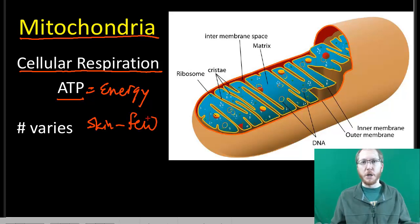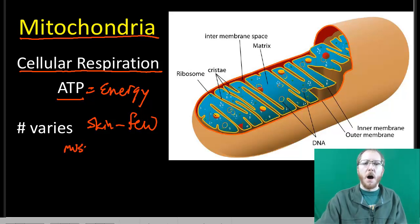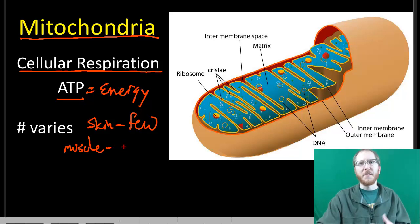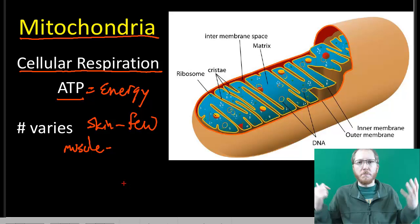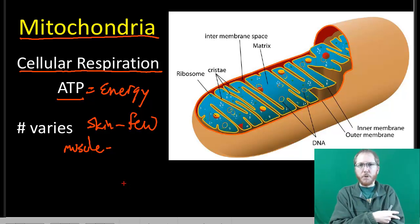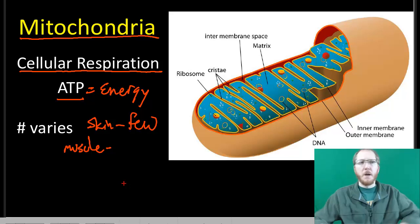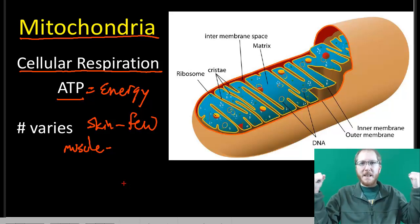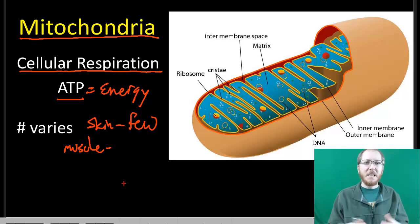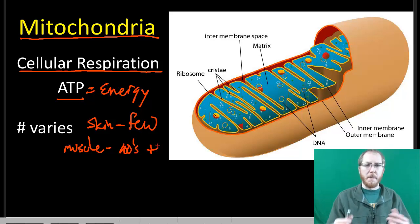The number of mitochondria will vary based on a cell's job. A skin cell would have very few because it does pretty much nothing — the equivalent of a couch potato; it just sits there on your skin. Whereas a muscle cell will have hundreds to perhaps even thousands of mitochondria because it's doing so much work — trying to use energy to contract and tug on things so we can move. It takes a lot of ATP, so muscle cells would typically have at least hundreds of mitochondria to cope with that.